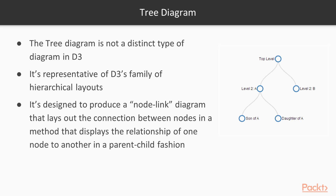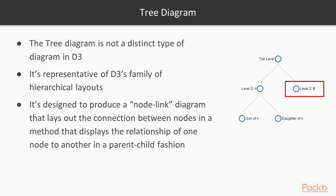For example, this diagram shows a root node — the starting position — labeled as 'top level', which has two children: 'level 2a', child of top level, and 'level 2b', child of top level. Subsequently, level 2a has two dependent nodes or children: 'son of a' and 'daughter of a'. The clear advantage to this style of diagram is that describing it in text is a bit difficult, but representing it graphically makes the relationships easy to determine.